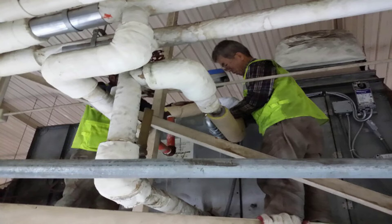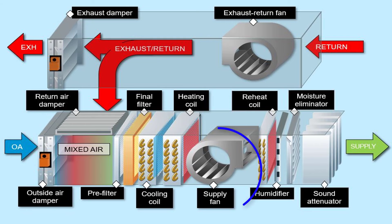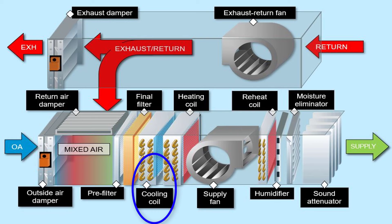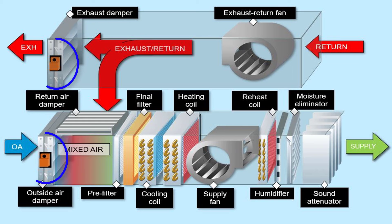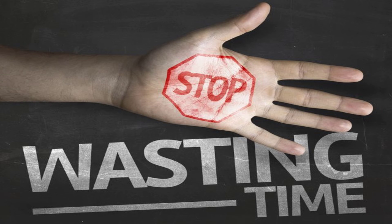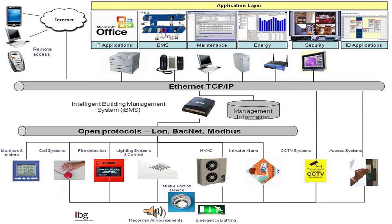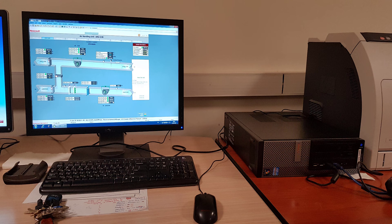Then again they will run to that AHU and try to investigate the problem — whether it comes from its fan, cooling valve, filter, or the damper installed on the return or supply. This process of checking may take a long time to solve the problem. In the second scenario, if you have a system which can monitor and control all the different MEP systems in your building from a central room, that central room is called the workstation, and this system is the Building Management System or BMS.